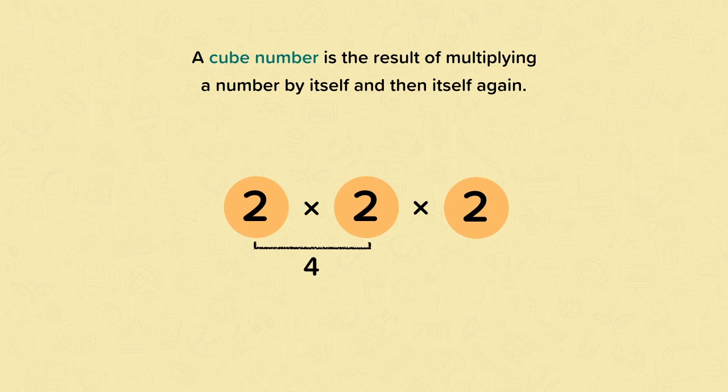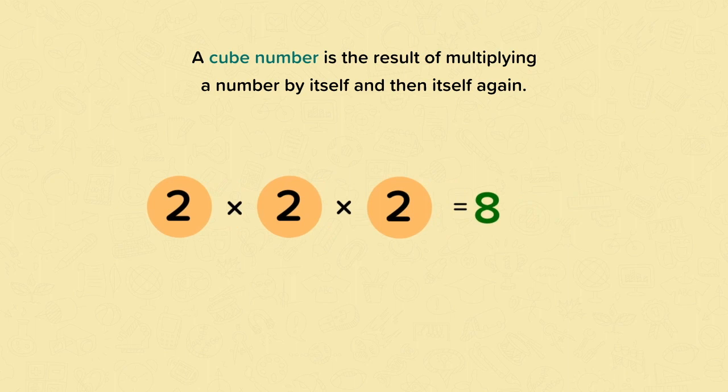And then we need to times 2 again. So we do 4 times 2, and that is 8. So 2 times 2 times 2 equals 8. 8 is a cube number.